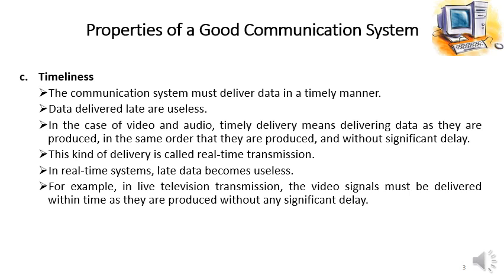So these are the three properties of a good communication system. First, delivery: data must be delivered to the correct destination, not to a wrong one. Second, accuracy: data must be delivered in correct form and must not be altered during transmission. Third, timeliness: data must be delivered on time without any delay over the network. Now we will study modes of communication.